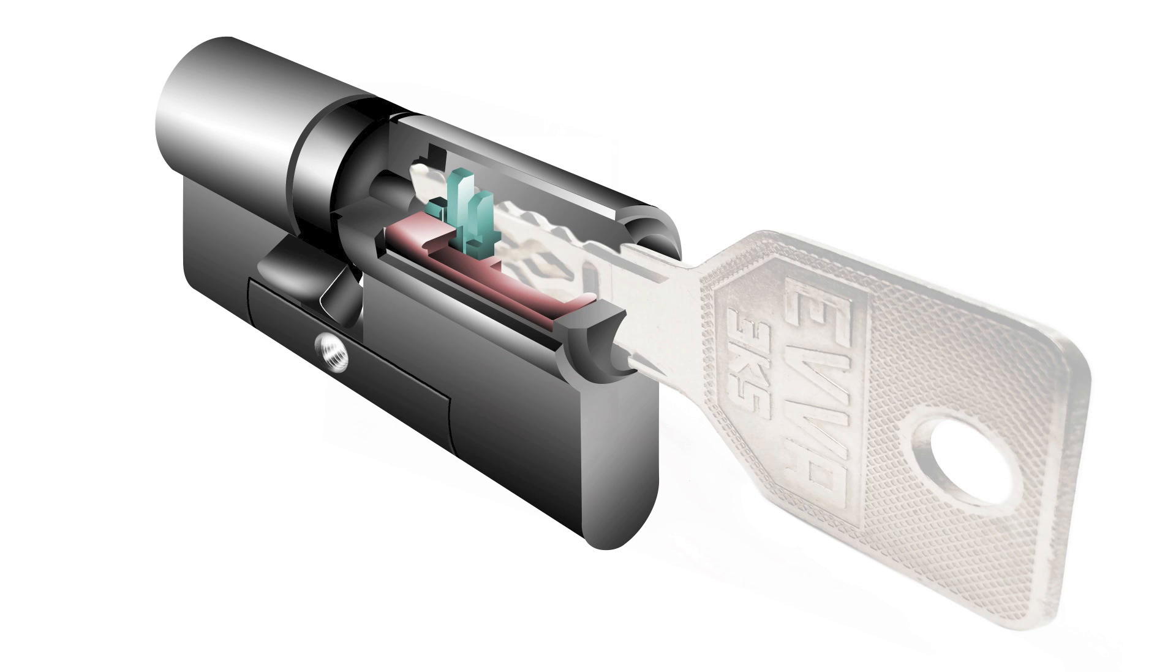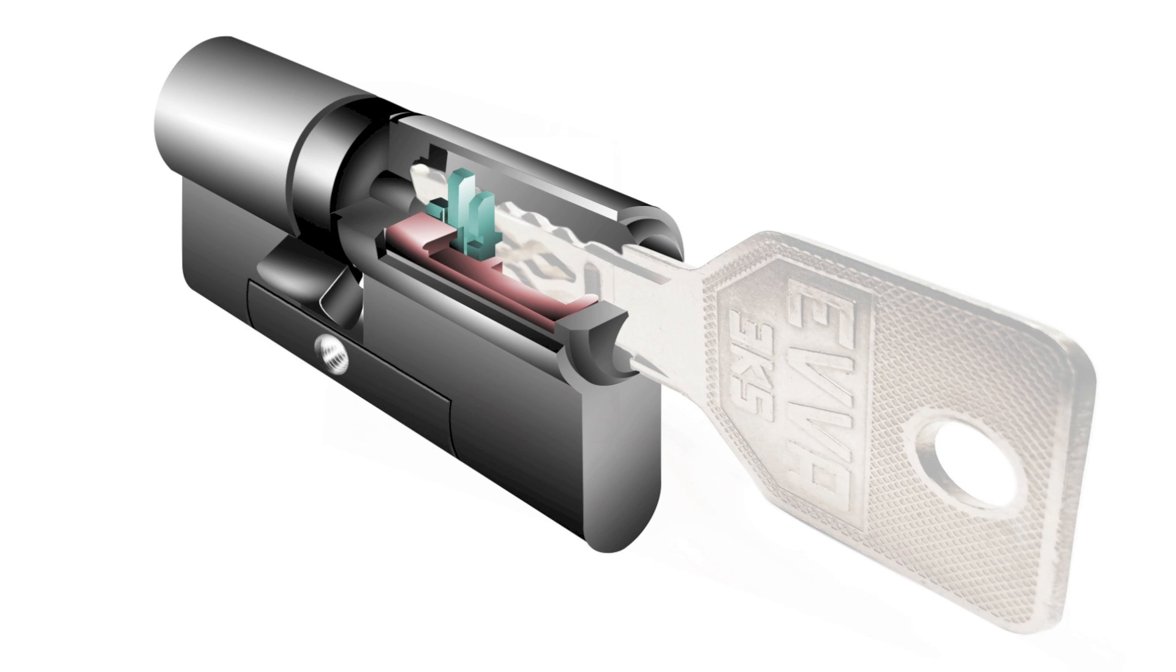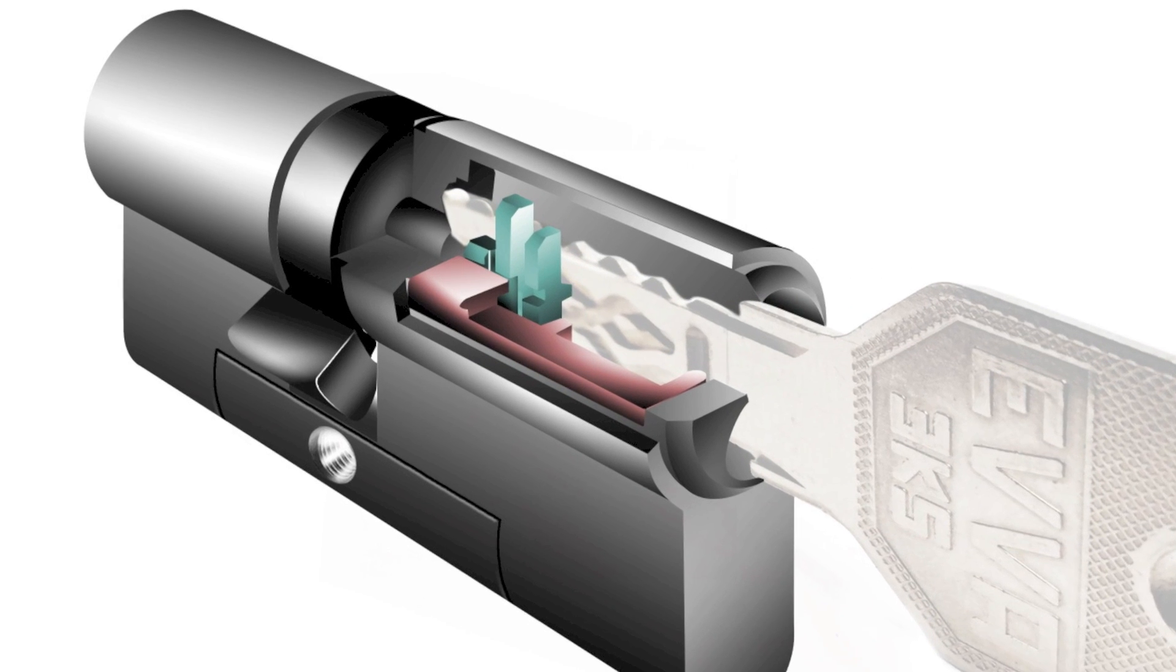Here on the illustration you can see three of the sliders in green and one of the two sidebars in red.